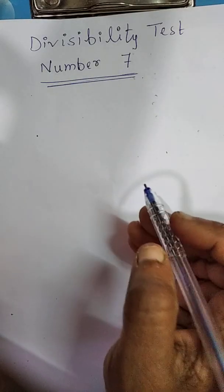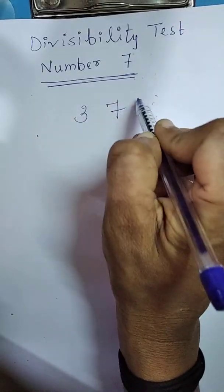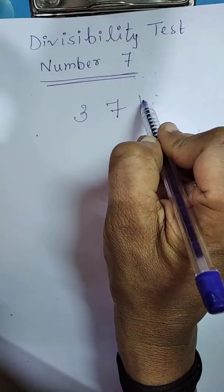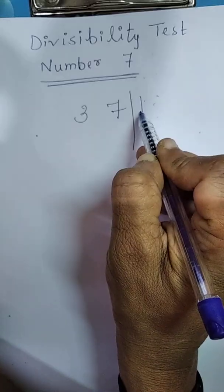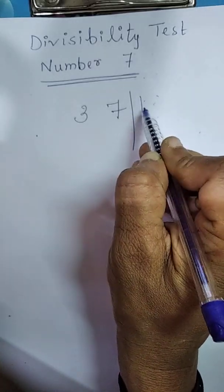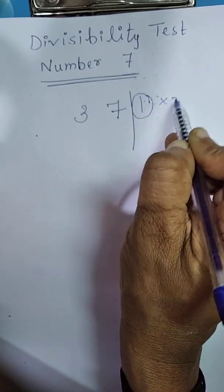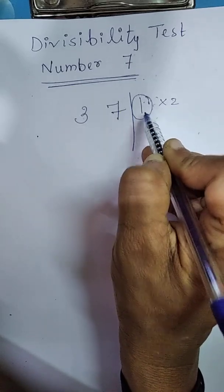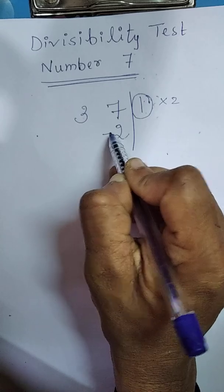Let us take number 371. Select last digit here. Draw one line. Now, the numbers are separated. Double this number. What is double of 1? It means multiplying with 2. That is, 2 times 1 is 2 just below the remaining part.